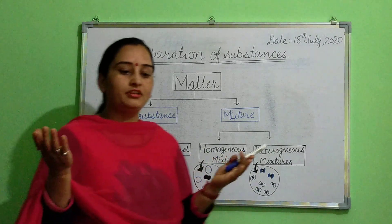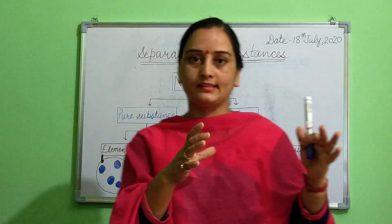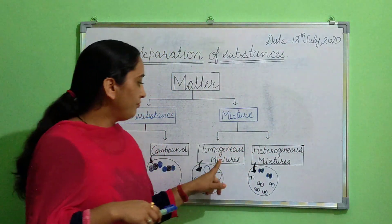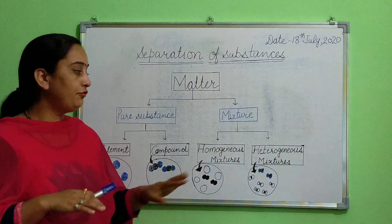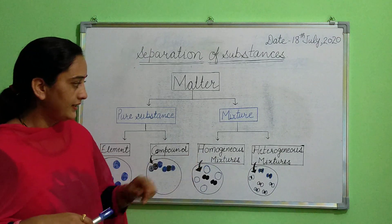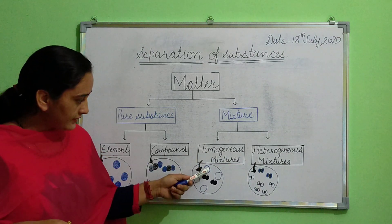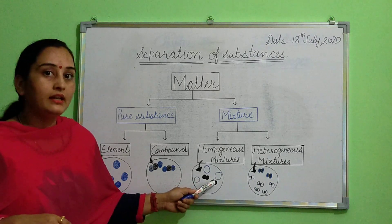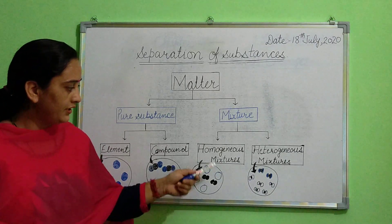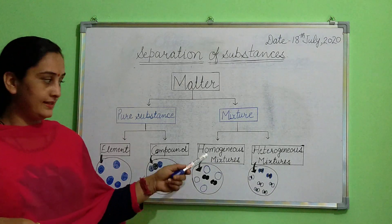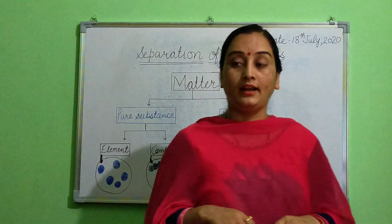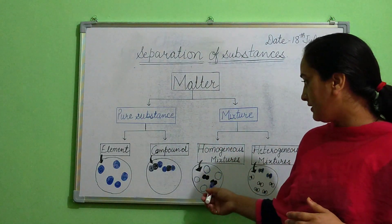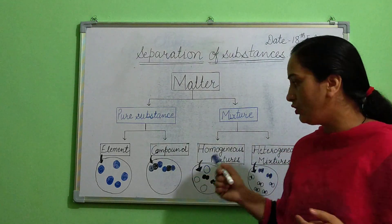Homogeneous — for example, if we take water in a glass and add milk to it, then the milk particles are distributed uniformly. We can say that is a homogeneous mixture. Milk will be uniformly distributed in water, hence there is uniform distribution and we can't separate these two. It is a homogeneous mixture, and we can also call it a solution.